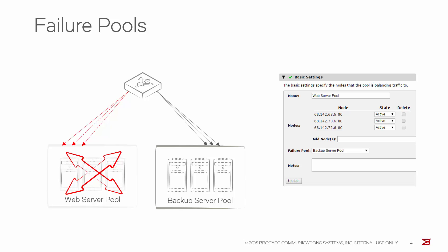Another useful feature of Traffic Manager is the failure pool. If every node in the original pool should fail, requests will be diverted to this failure pool until nodes are available. A failure pool for an application could be a single failure server that provides an out-of-service message, or backup application servers that are able to function independently.